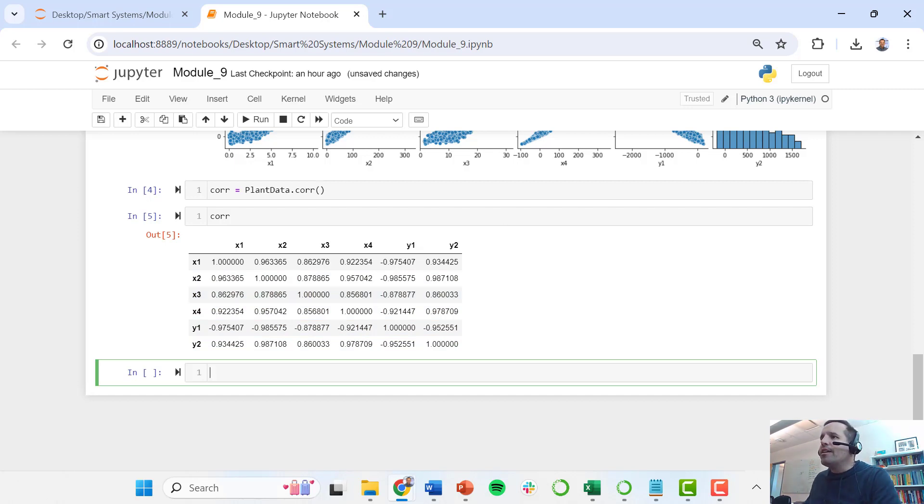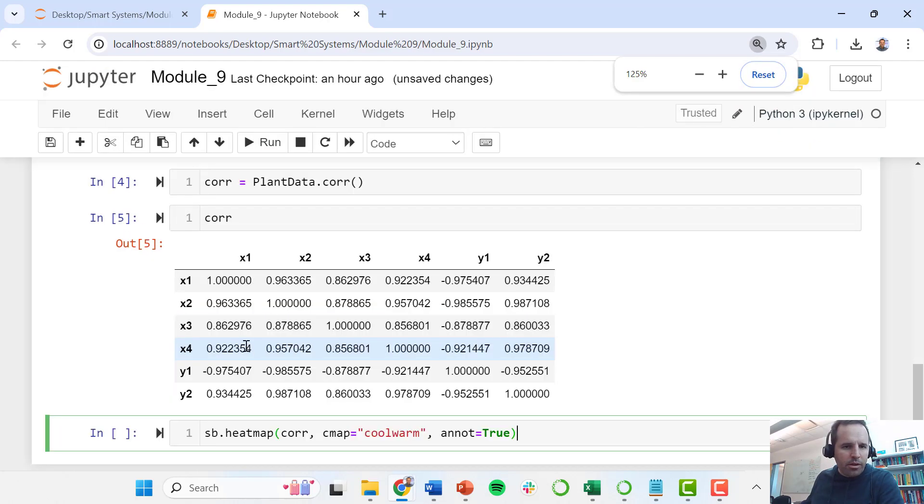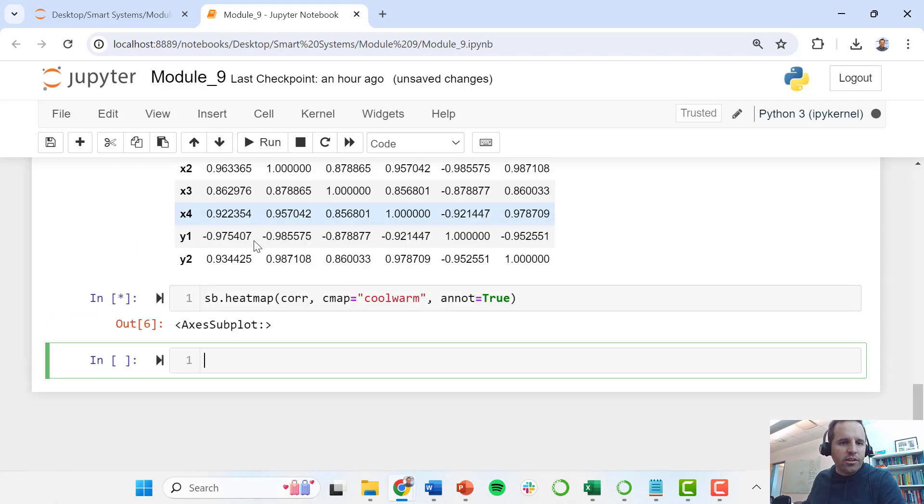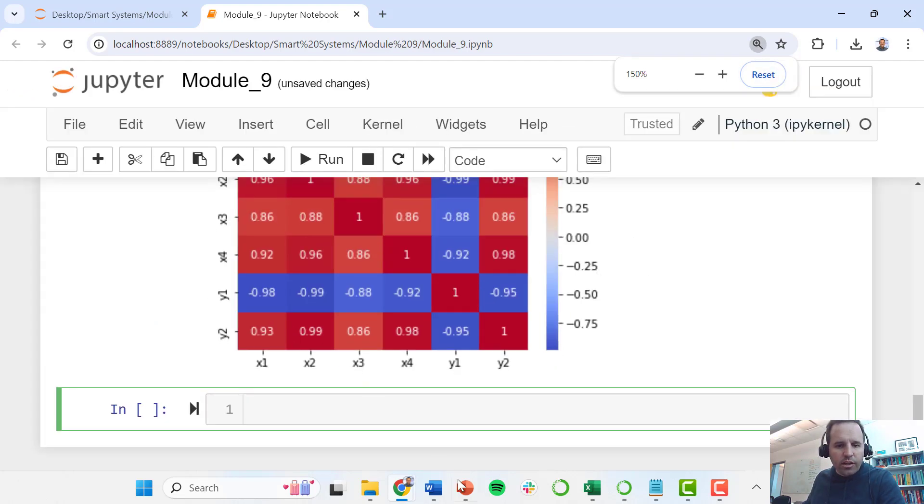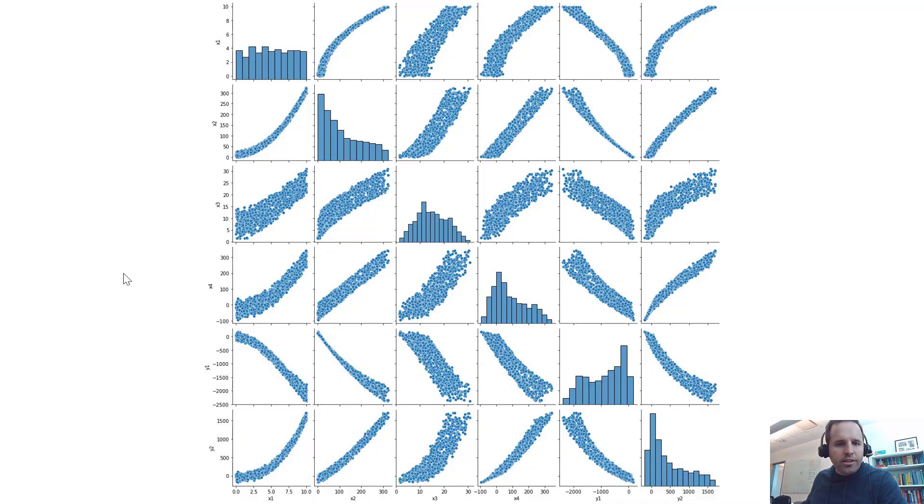We can add in a heat map if we wanted using the Seaborn tool that we've already used. I'm going to go ahead and do that, just type in Seaborn.heatmap, and I want to generate a heat map of this correlation matrix. I want to give this a cool, warm color scale, so that's going to be blue for strong negative relationships, red for strong positive relationships. I'm going to tell it I want to annotate this so it puts the labels on there. Here is how that correlation matrix looks, and I'm going to jump back into my slideshow.